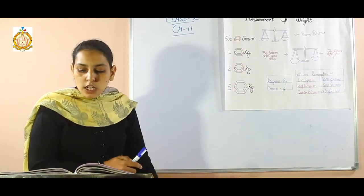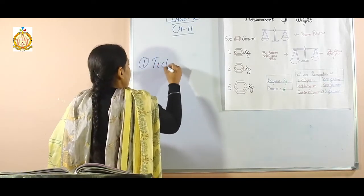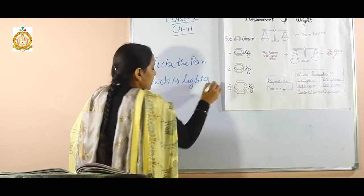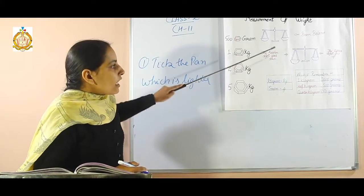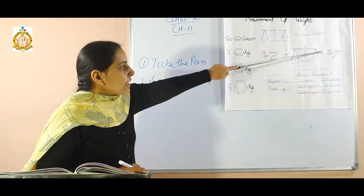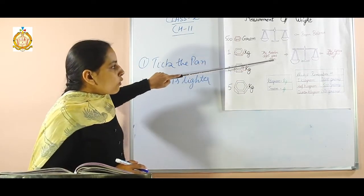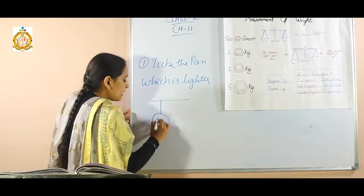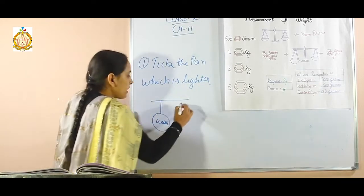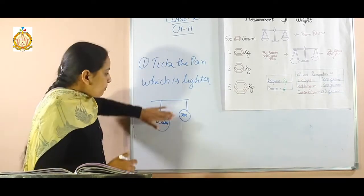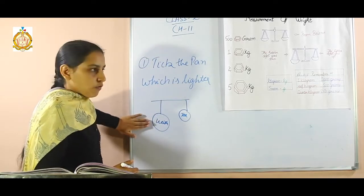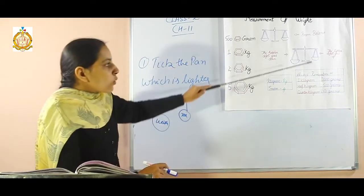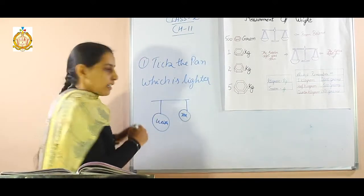For example, in the first sum, you have to take the pan which is lighter. Now, there are two pans. Which one is the lighter? The pan which is on the upward direction is lighter and the pan which is on the downward direction is heavier. For example, in the first pan there is some weight and in the second pan there is a T. The T pan is on the upward direction and the weight is on the downward direction. Here you have to take the lighter pan. The lighter one goes towards the upward direction, so T is the lighter pan.